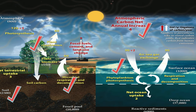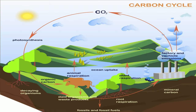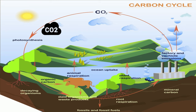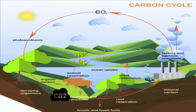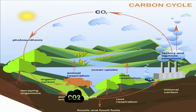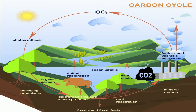Carbon recycles among five major locations: the atmosphere, the terrestrial biosphere or land, the Earth's interior, the ocean, and human influence. Let's take a look at what happens at each of these areas.